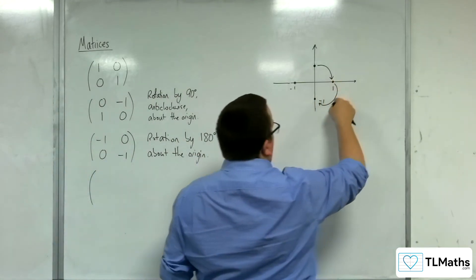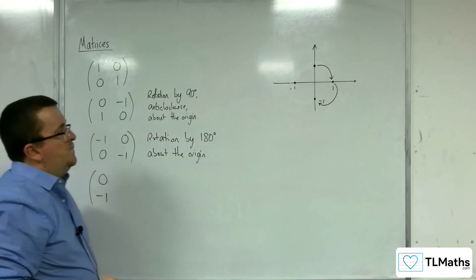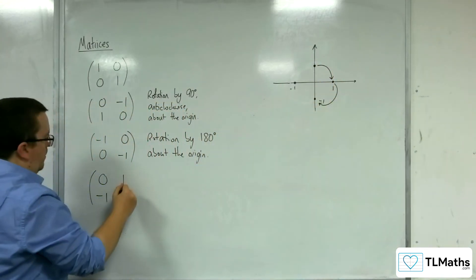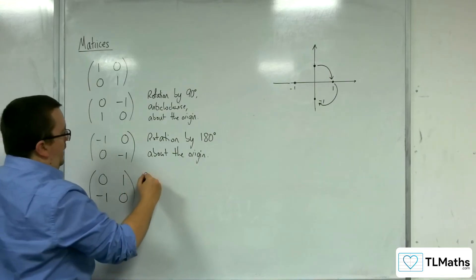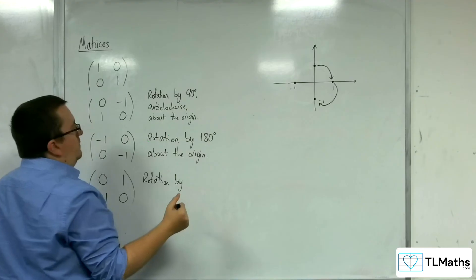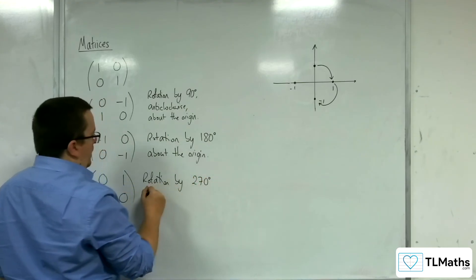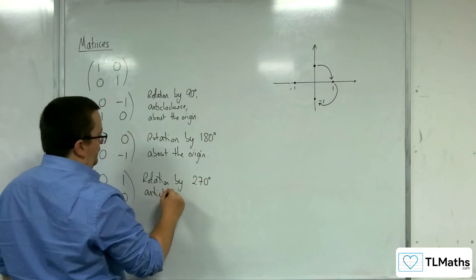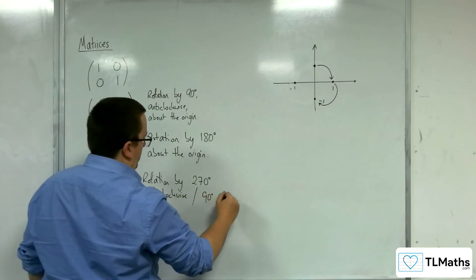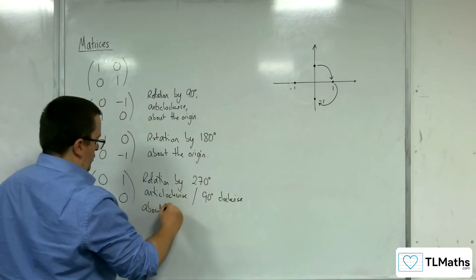So 1, 0 has gone down to 0 minus 1. And 0, 1 has gone to 1, 0. So this is a rotation by, now we could say 270 degrees anticlockwise, or 90 degrees clockwise, about the origin.